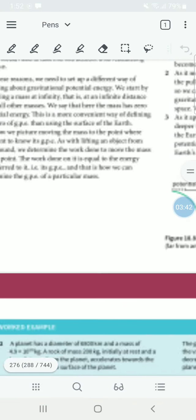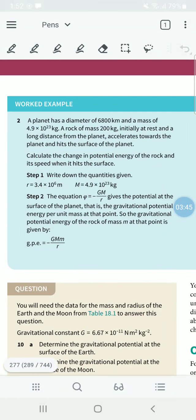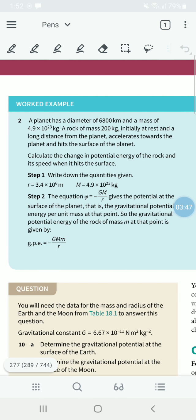Right, now let's move on to the worked example. A planet has a diameter of 6800 kilometers and a mass of 4.9 × 10^23 kilograms. A rock of mass 200 kilograms, initially at rest at a long distance from the planet (we have to take it as at infinity), accelerates towards the planet and hits the surface of the planet. Please pay attention to these questions because these questions will come for your exam as is.